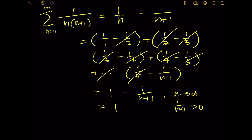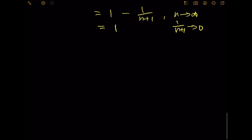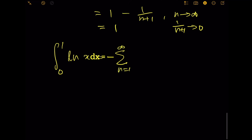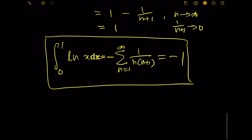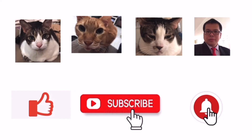Substituting 1 back into the original equation, we conclude: the integral from 0 to 1 of ln(x) dx equals negative sum from n equals 1 to infinity of 1 over n(n plus 1), which equals negative 1. This is the final answer. Thank you for watching — don't forget to subscribe to my channel and click the bell notification button. Bye bye!